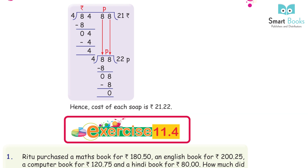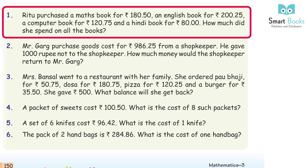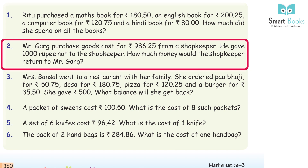Exercise 11.4, Question 1: Ritu purchased a maths book for Rs. 180.50, an English book for Rs. 200.25, a computer book for Rs. 120.75, and a Hindi book for Rs. 80. How much did she spend on all the books? Answer: Rs. 581.50. Question 2: Mr. Garg purchased goods worth Rs. 986.25. He gave Rs. 1000 to the shopkeeper. How much would the shopkeeper return? Answer: Rs. 13.75.